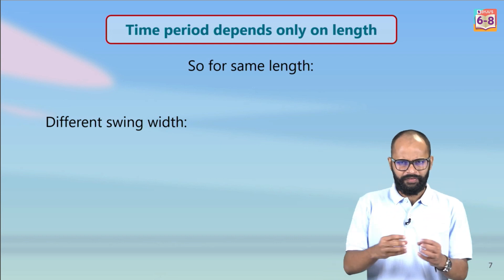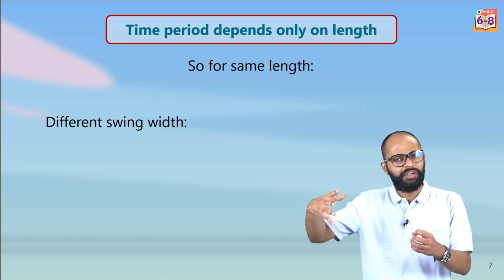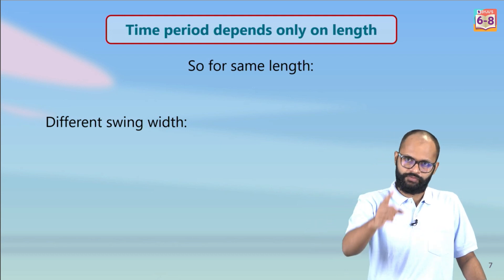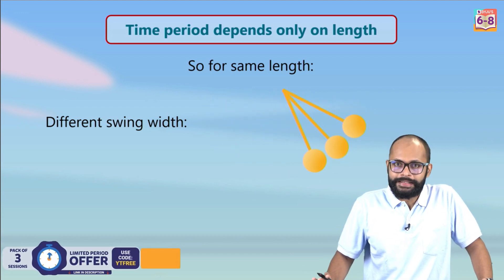So different swing width, does it depend on different swing width? It should, if I take a pendulum, release it from here or release it from here, it should be different. But you know what, it is not. We have seen this also. Different swing width, time period does remain same, it does not change.